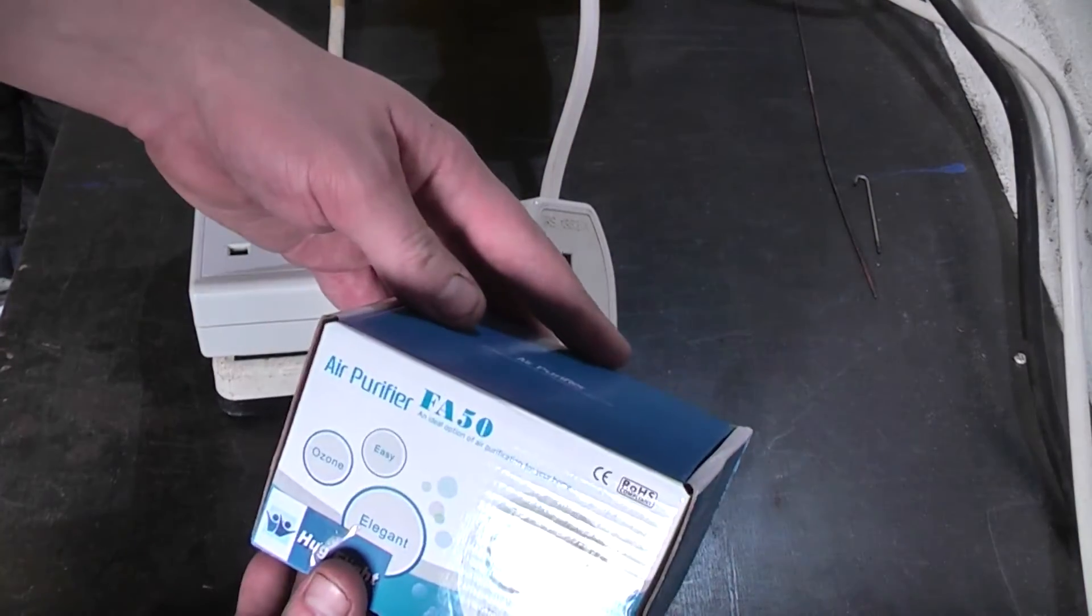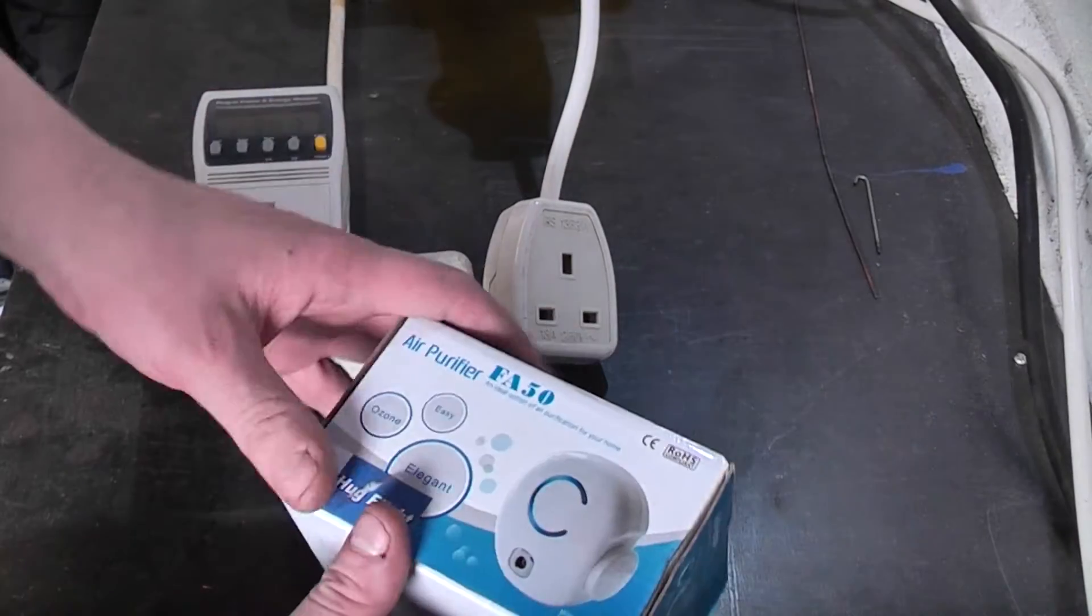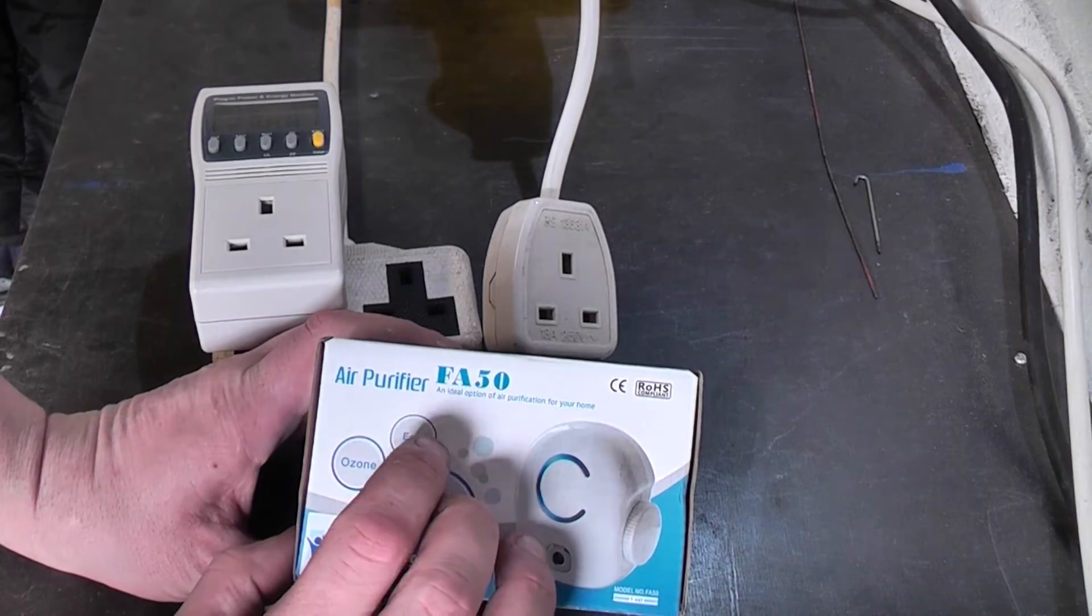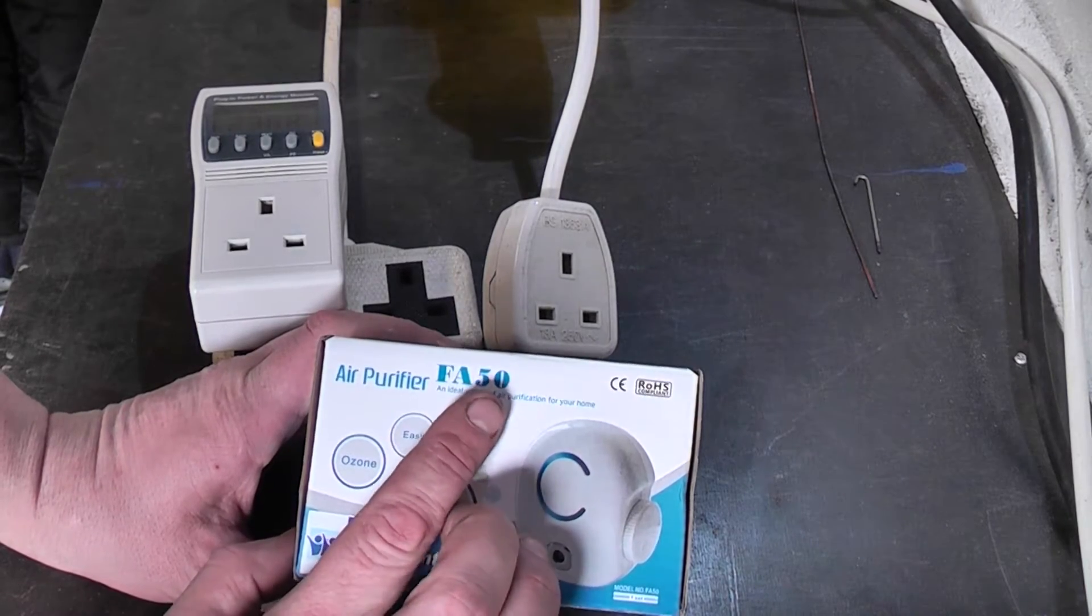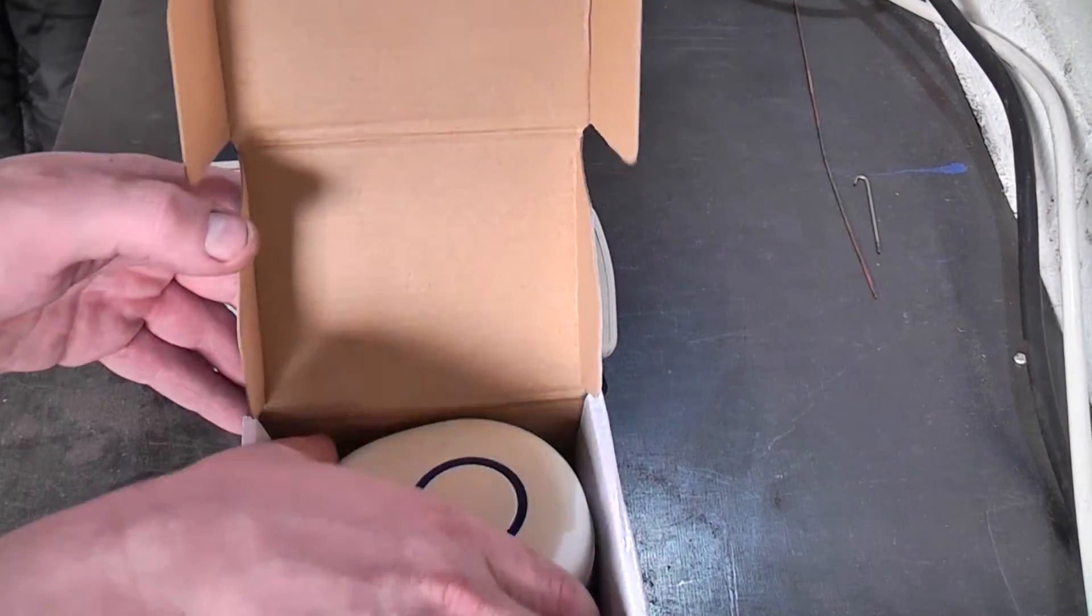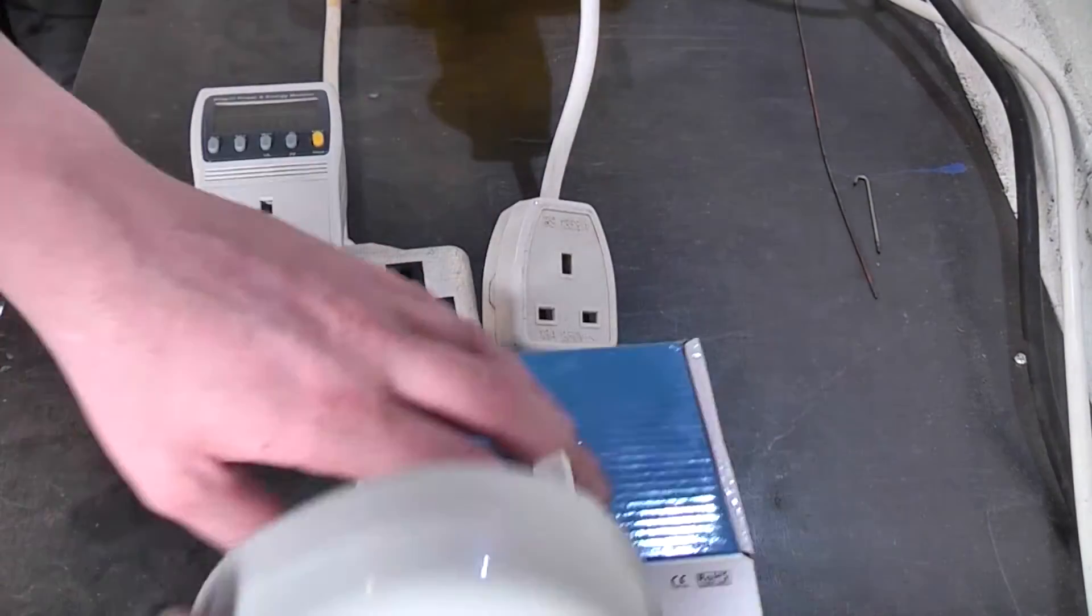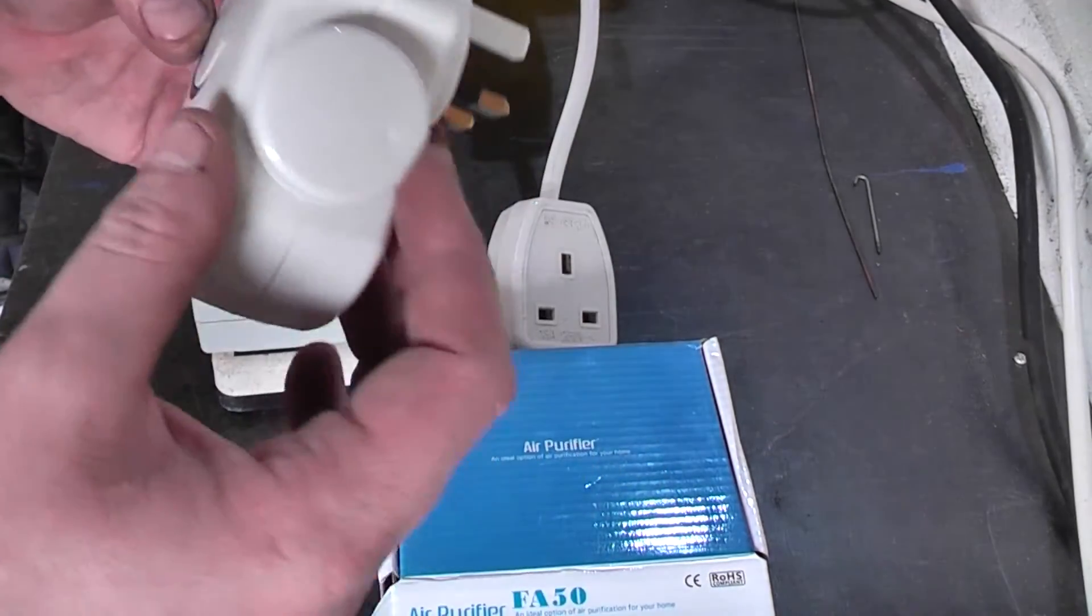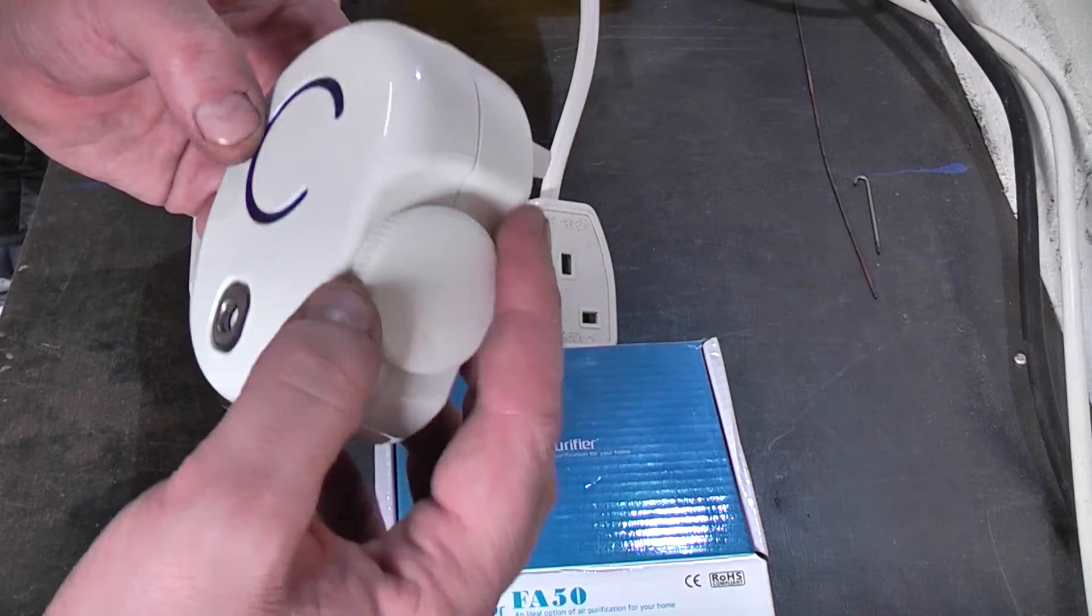I'm going to take a look at this miniature plug-in ozone generator, an air purifier FA50, an ideal option for air purification for your home. I have unboxed it and plugged it in and used it. It's a neat little device that plugs straight into your wall socket. You've got on and off and control for the ozone output.